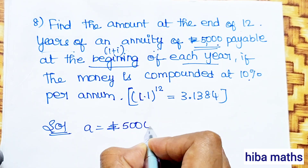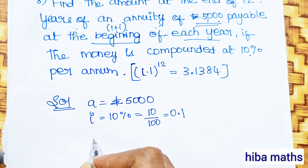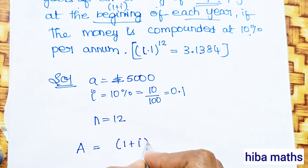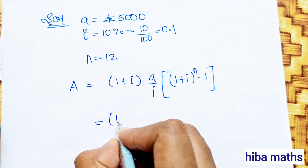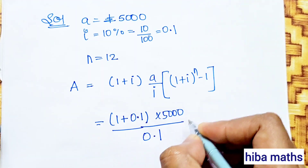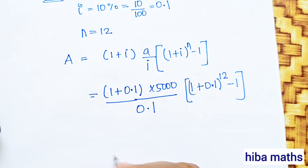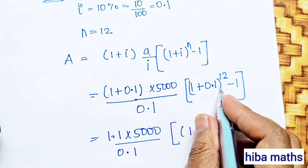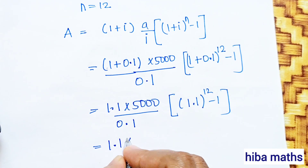A is equal to 5,000; i is equal to 10% = 10 by 100 = 0.1; n is equal to 12 years. The formula for annuity due is A = (a/i) into (1 plus i) into (1 plus i power n minus 1). Substituting: 5,000 divided by 0.1 into 1.1 power 12 minus 1.